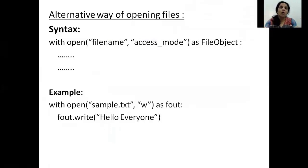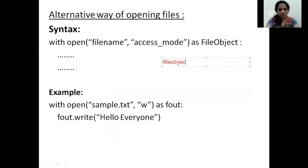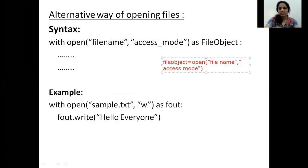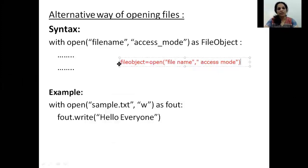We have learnt ways of opening a file. Let me just recollect the method we have learnt for opening a file. We wrote the name of the file object, then is equal to, then we wrote the name of the function which helps me open the file. Then I wrote the file name in quotes and I also wrote the access mode in quotes. This was the method of opening a file whether it was in read mode or write mode.